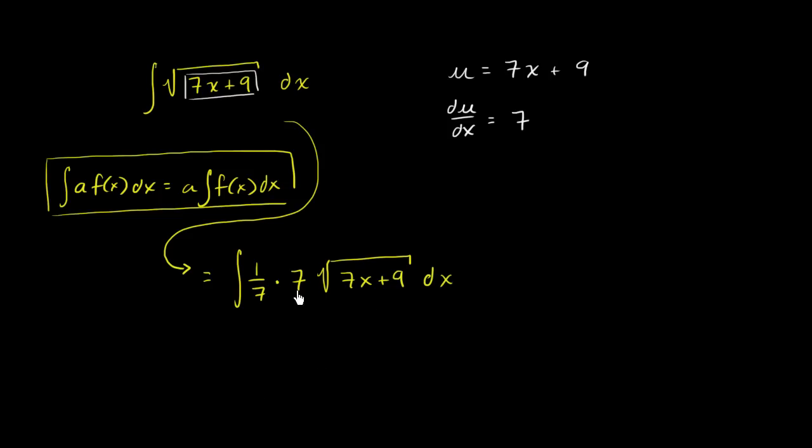And if we want to, we could take the 1 seventh outside of the integral. We don't have to, but we could rewrite this as 1 seventh times the integral of 7 times the square root of 7x plus 9 dx. So now, if we set u equal to 7x plus 9, do we have its derivative laying around? Well, sure. The 7 is right over here. We know that du, if we want to write in differential form, du is equal to 7 times dx.